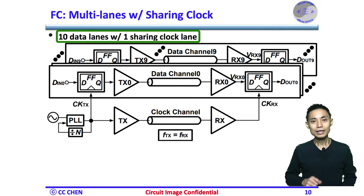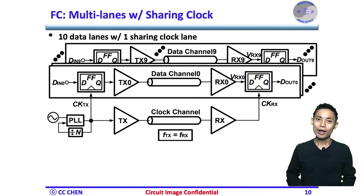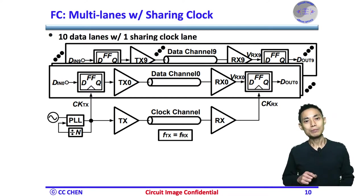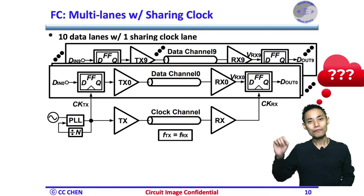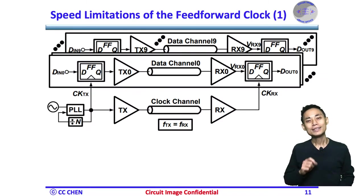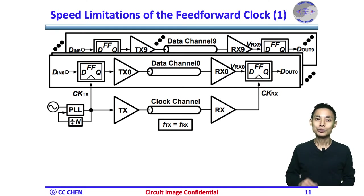For example, if 10 data lanes are sending data with one clock lane for synchronous clocking, then the clock overhead is only 10% in the link. Therefore, the throughput is efficient with fewer wires. But this feed-forward shared clock will still limit the maximum operating frequency, because there are 10 lanes and those 10 data paths may not have the same delay. Therefore, the shared clock only guarantees the same frequency, but not the phase.